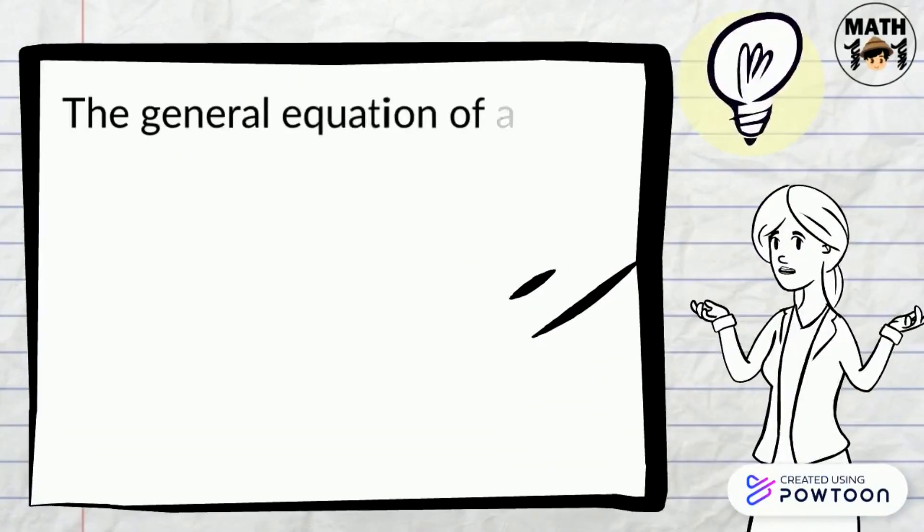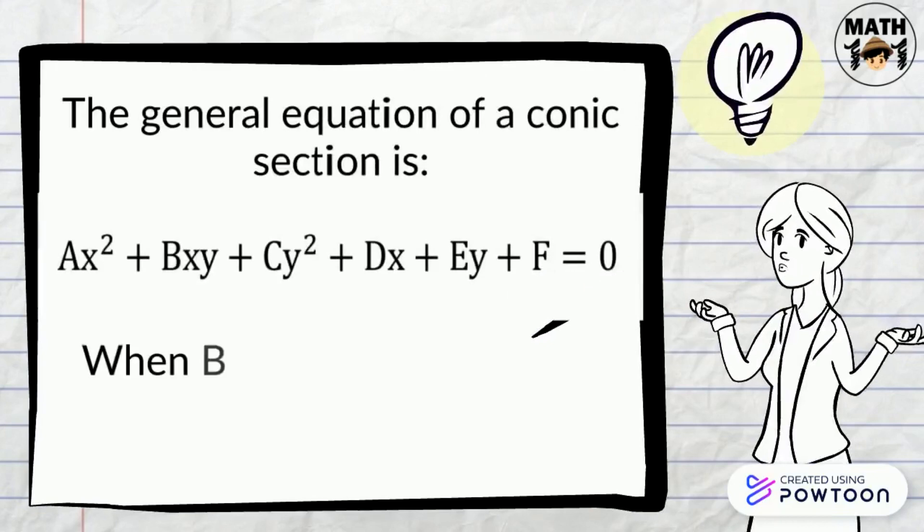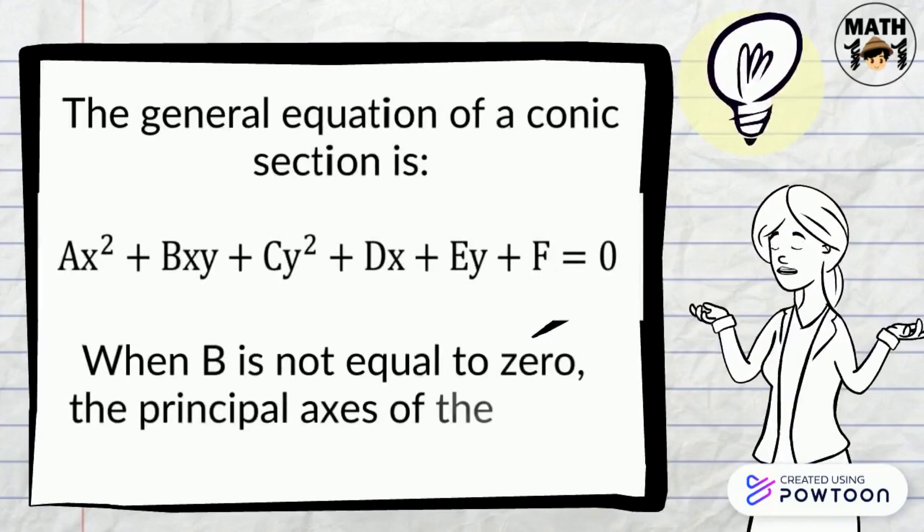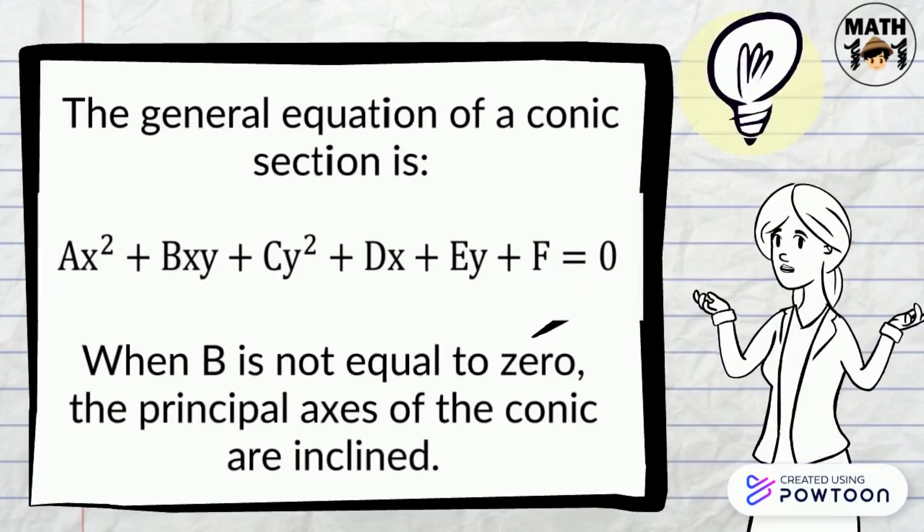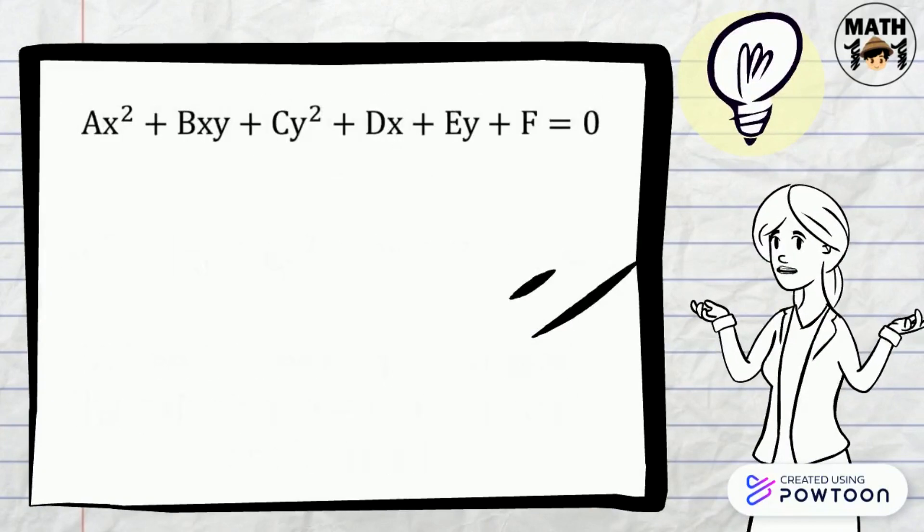This is the general equation of a conic section. If b is not equal to zero, the principal axis of the conic is not parallel with the x and y axis.